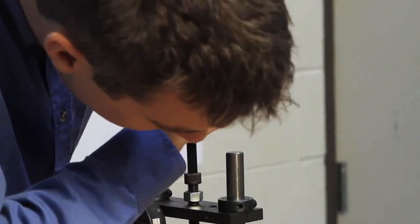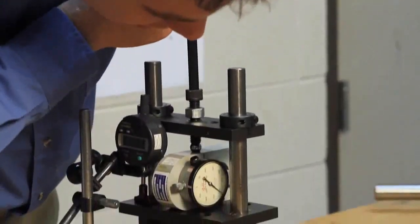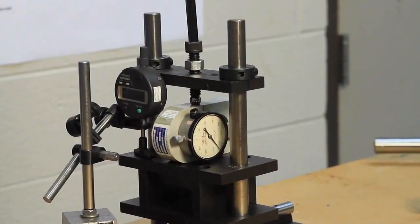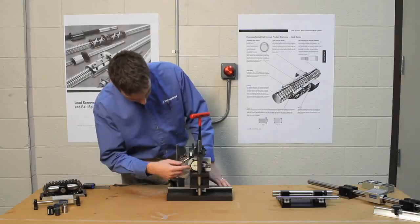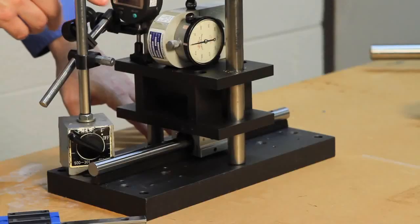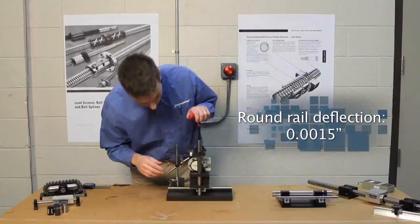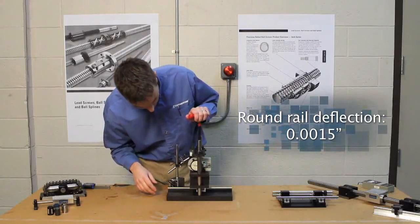We're actually going to torque down on this force gauge which is going to apply a load to the rail. You can see how much load we're applying here on the gauge and then we're going to read on this indicator on the side how much the entire unit is deflecting. So we're going to load it up to 320 pounds.